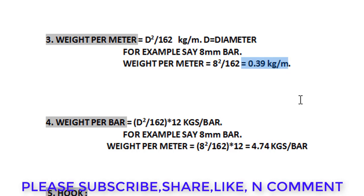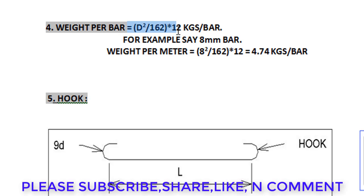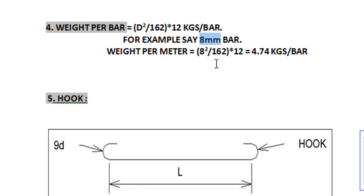For the same bar, we can find the weight per bar. Since the bar length is 12 meters, the formula is d² / 162 × 12. For an 8mm, 12-meter bar, the weight equals 4.74 kg per bar, which is more than four and a half kilograms per bar.